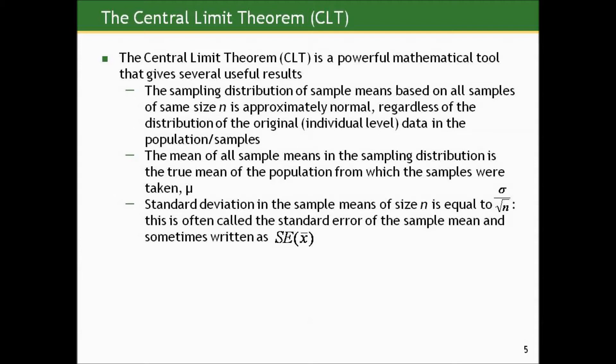The CLT tells us you don't have to do multiple studies, because it can tell you that the sampling distribution of sample means based on all samples of the same size n is approximately normal, regardless of the distribution of the original data in the population that you're sampling from. It also tells us that the mean of all sample means in the sampling distribution is the true mean of the population from which the samples were taken.